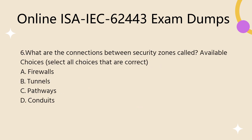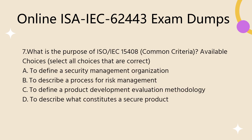Question 6. What are the connections between security zones called? Select all choices that are correct. A. Firewalls. B. Tunnels. C. Pathways. D. Conduits.